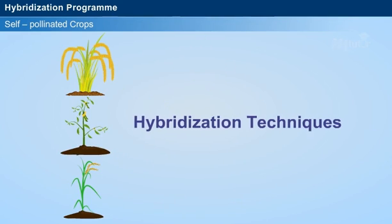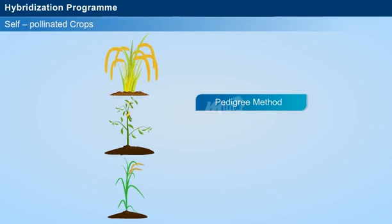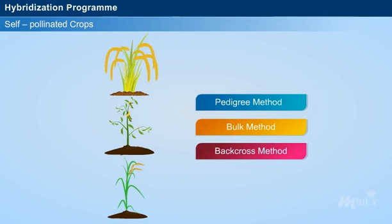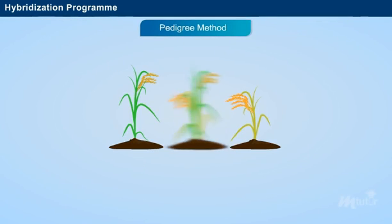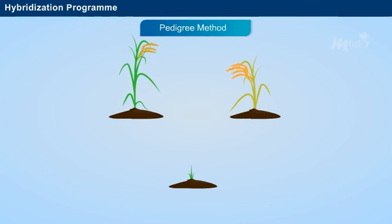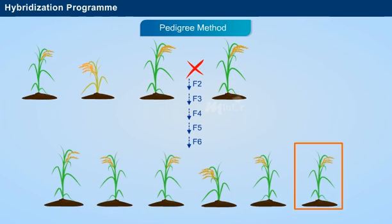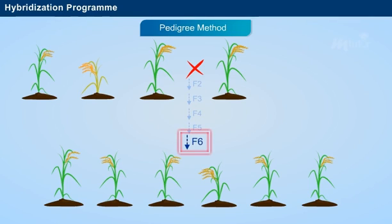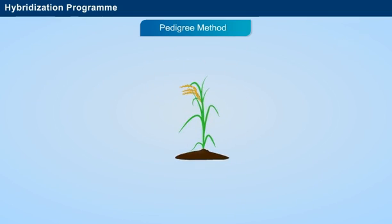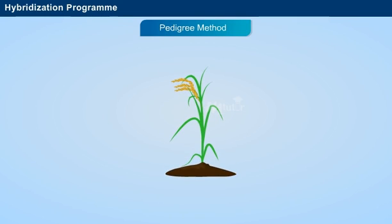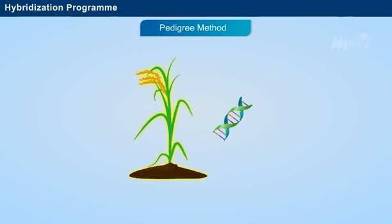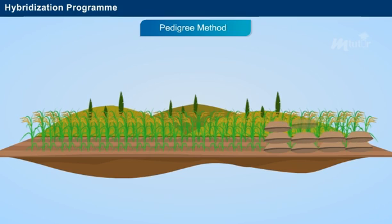Self-pollinated crops like wheat, pea, and rice involve hybridization techniques like pedigree method, bulk method, and back cross method. The pedigree method refers to the selection of a desired variety of plants from the F2 generation, carried out until the selected varieties show null segregation, often after the F6 generation. Nearly 9 to 10 years is required to raise a new variety. The advantage is that a new variety with improved heritable characters can be released within a short span of time to improve yield.